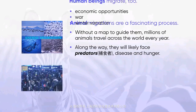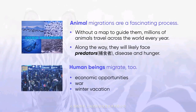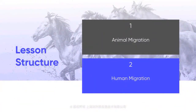From economic opportunities to war to winter vacation, human beings migrate too. Throughout history, great human migrations have changed societies, countries, and the world at large. In today's lesson, we will look at some great migrations among humans and animals. This lesson has two parts. Part one discusses the migrations of different animals, such as the Arctic tern, salmon, and animals of the Serengeti. Part two discusses different kinds of human migration and the causes behind them.